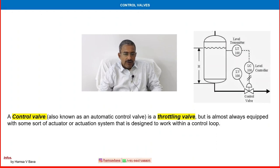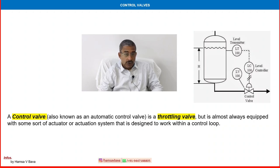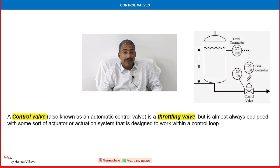A control valve, also known as an automatic control valve, is a throttling valve, but almost always equipped with some sort of actuator or actuation system that is designed to work within a control loop. On-off valves are there, isolation valves are there. If you remember our previous videos, many types of valves are there: on-off valve, isolation valve, non-retain valve, check valve. This new word is throttling valve.